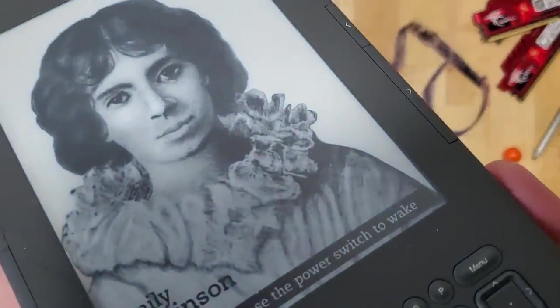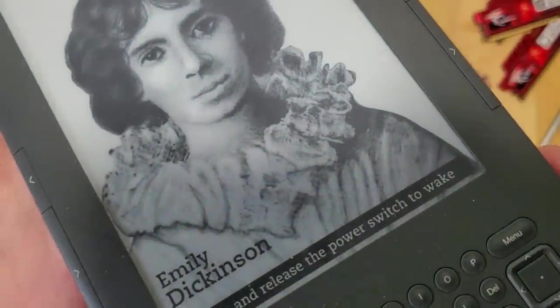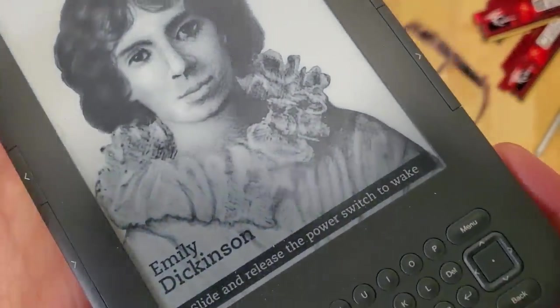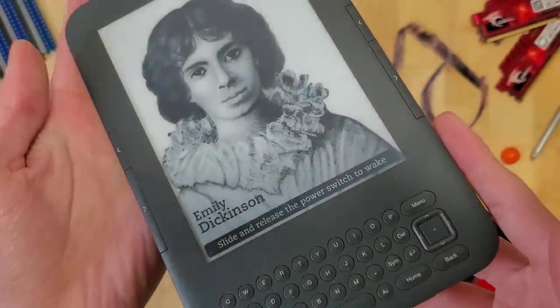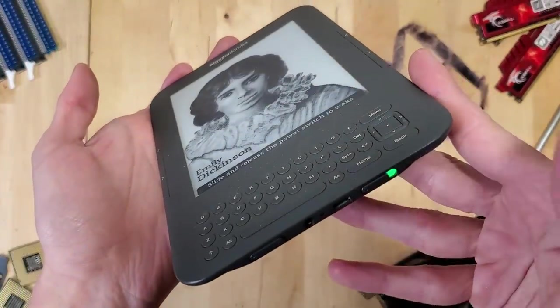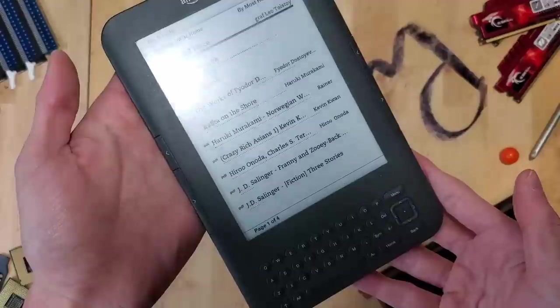Now, aside from the fact that e-ink displays are just super cool in general because they only require energy when pixels need to change, like right now this isn't powered on, but has an image on it. Aside from that, Amazon actually hid a cool Easter egg within this Kindle.